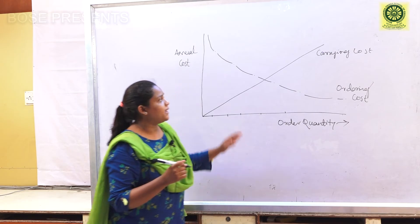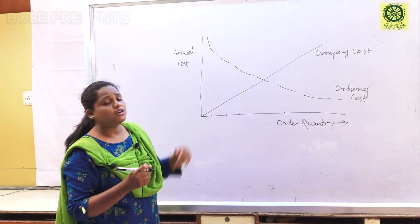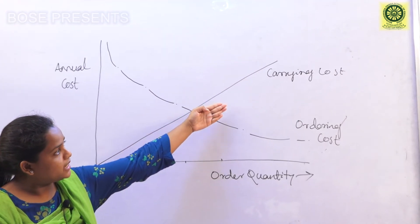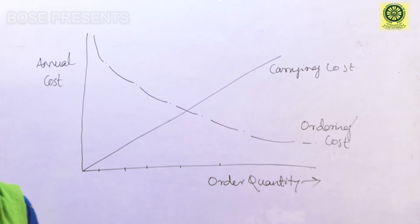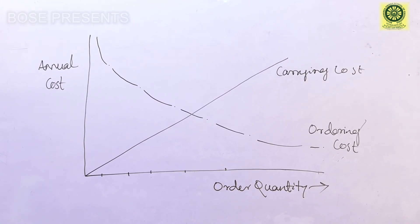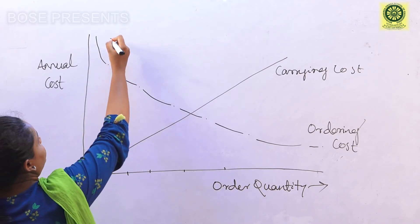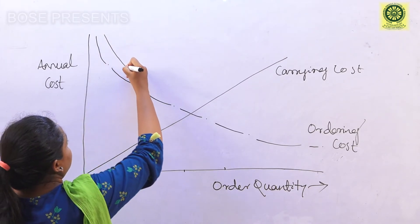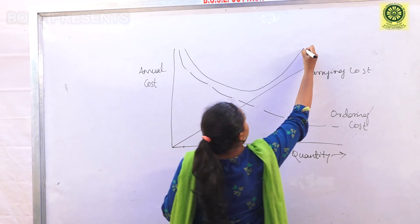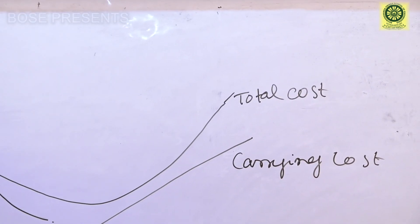By combining these two costs, we can conclude and draw the total cost curve. The total cost depends upon carrying cost and ordering cost. By adding these two costs we can calculate the total cost for our company. Combining them produces a U-shaped total cost curve.